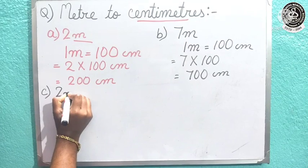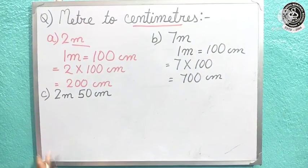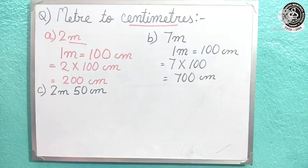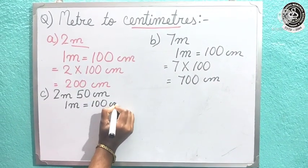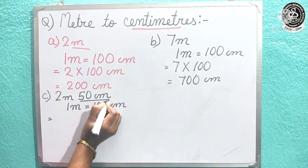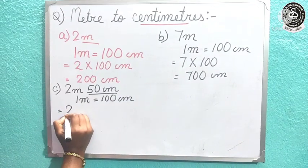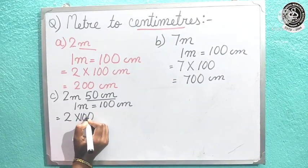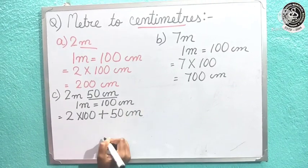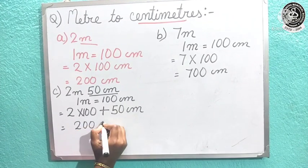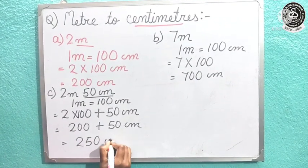Now question number C: it is given 2 meter and 50 centimeter. Half part is in meter and half part is in centimeter — no worry, same process we will follow. We know 1 meter is equal to 100 centimeter. The 50 is already in centimeter, so nothing to do with that. We only convert the 2 meter: 2 into 100 is 200, plus 50 centimeter already given, and the total is 250 centimeter.